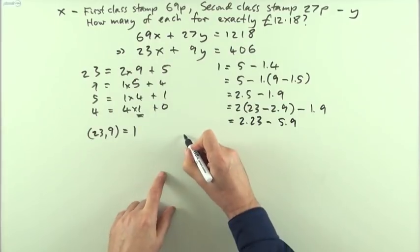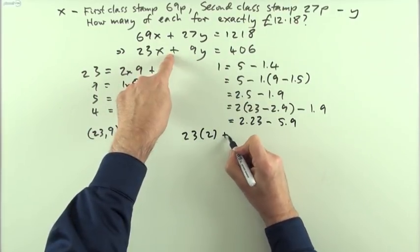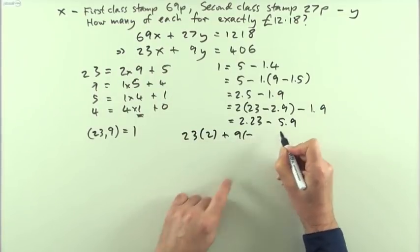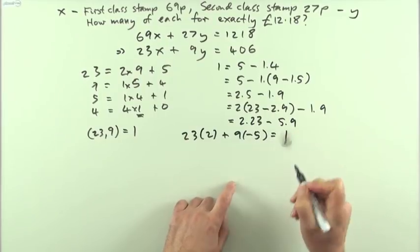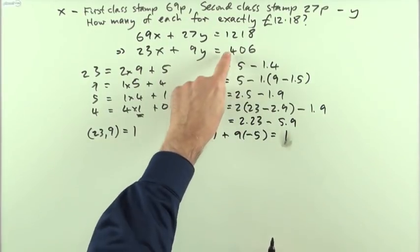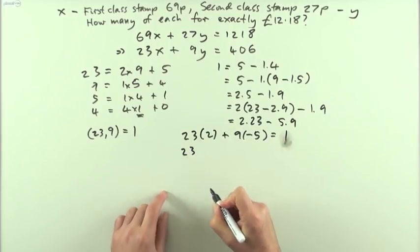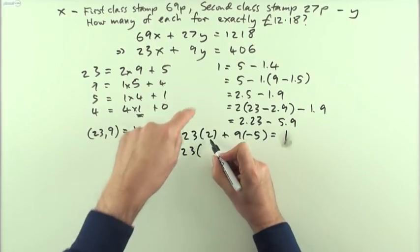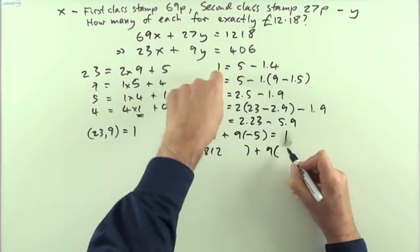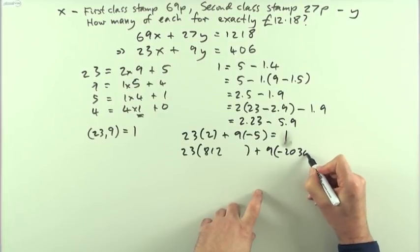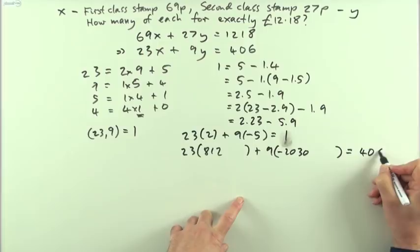So for this equation, I can say my solution is, I've got 23 times 2, and it has to be a plus. 9 times, and it'll have to be the negative 5, would give me, sorry, would give me just 1. But I want it to give me 406. So I'll just multiply this up, and then you'll just notice the same numbers appearing again. So it's going to have to be 812, and it's going to have to be 5 times it, negative 2030, which is equal to 406.